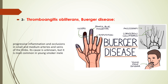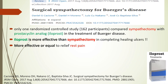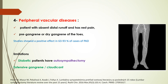Thromboangiitis obliterans, or Buerger's disease, is a disease affecting medium and small-sized vessels in heavy smokers. In comparison between sympathectomy and prostaglandin analogs, prostaglandin analogs are more effective than sympathectomy in achieving complete ulcer healing, and are more effective or at least equal in relieving rest pain. For Raynaud's or vascular spastic disease, the patient with absent distal run-off who has rest pain is suitable for small areas of dry gangrene, but not for extensive gangrene, chronic pain, or diabetic patients who have auto-sympathectomy.